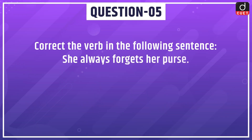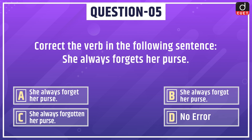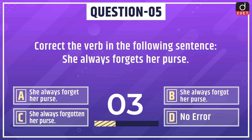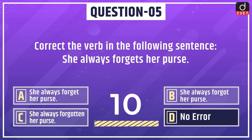Next question: correct the verb in the following sentence — 'She always forgets her purse.' Options: she always forget her purse, she always forgot her purse, she always forgotten her purse, or no error. The correct answer is option D: no error.